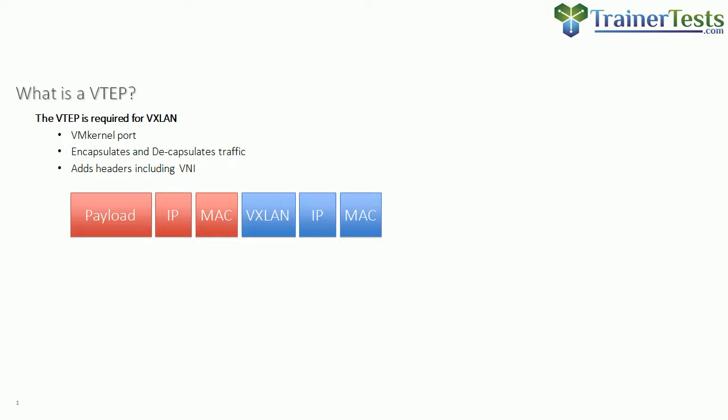This makes it easy to distinguish a VNI identifier from a VLAN identifier, since VLAN identifiers can't go that high. Each VNI serves as a unique logical identifier for a logical switch, and as logical switches are created, the VNIs are automatically assigned.